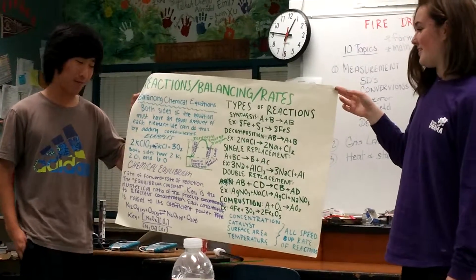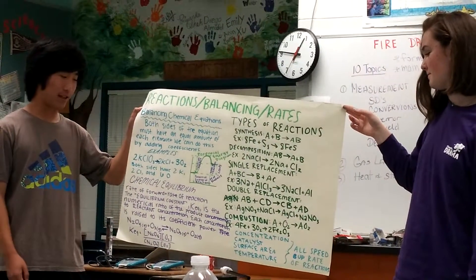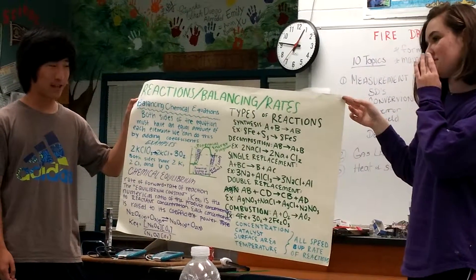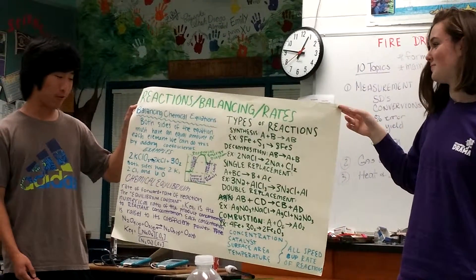And then chemical equilibrium is a state in which the rate of forward reaction and the rate of reverse reaction are balanced because they take place at an equal rate.